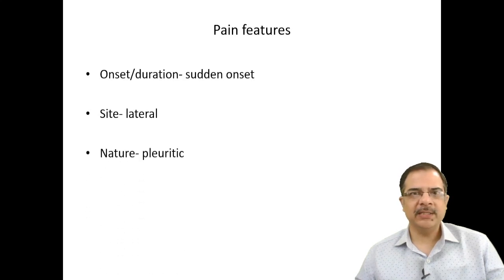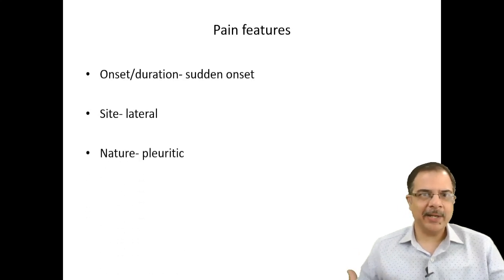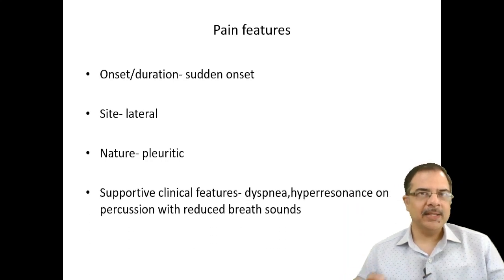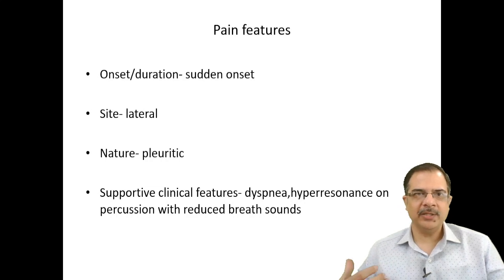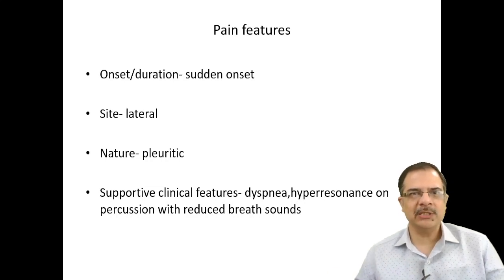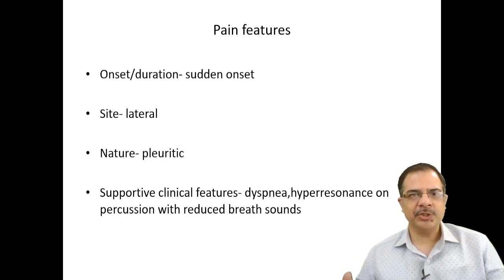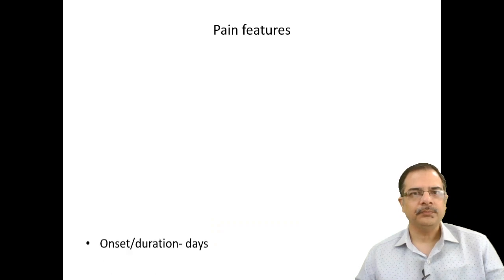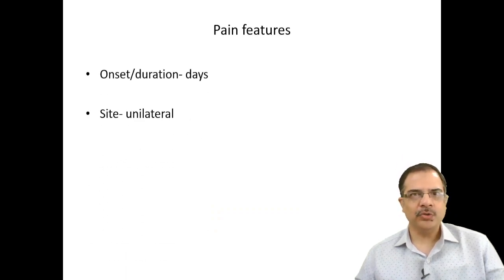If onset is sudden, site is lateral, nature is pleuritic, but supportive features include dyspnea, mediastinal shift towards the other side of the lesion, hyper-resonance on percussion, and reduced breath sounds — these typical features are suggestive of pneumothorax.